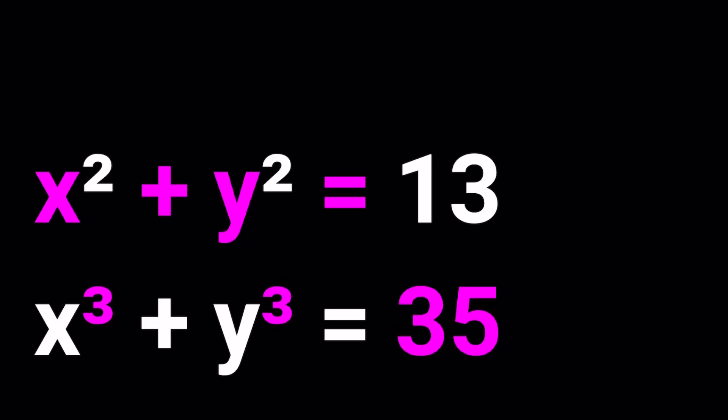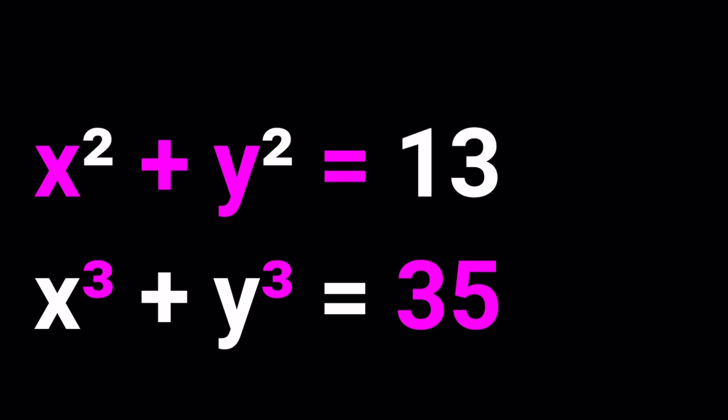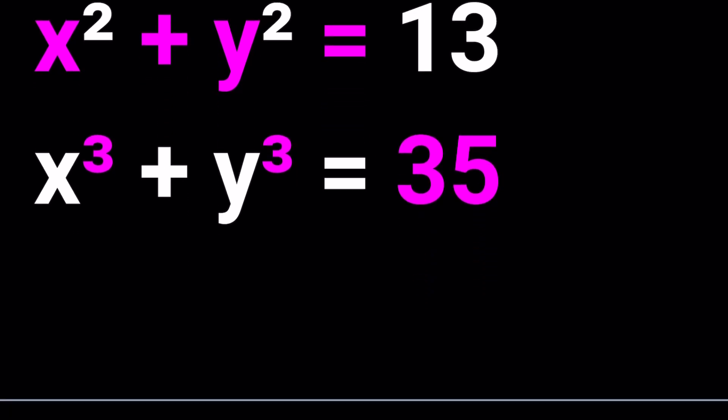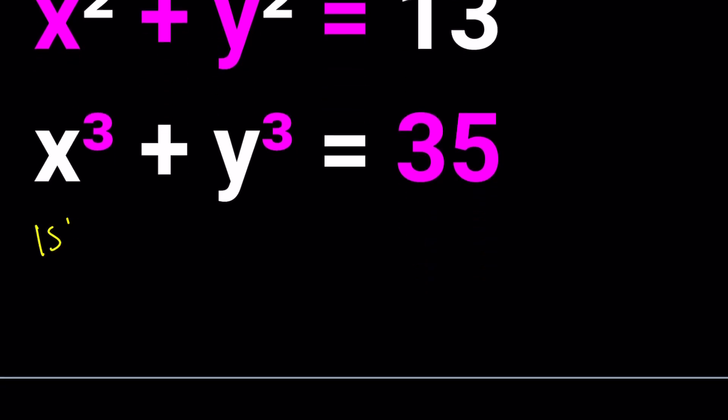Hello everyone. In this video we're going to be solving a polynomial system. We have x squared plus y squared equals 13 and x cubed plus y cubed equals 35, and we're going to be solving for x and y values. We're also going to be looking at some results from WolframAlpha as well as some graphs. I'll be presenting two methods.